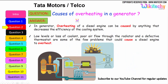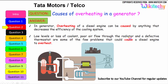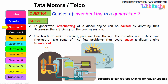Let us move on to the next question: causes of overheating in a generator. Overheating of a diesel engine can be caused by anything that decreases the efficiency of the cooling system — such as loss of coolant or low coolant levels, poor airflow through the radiators, and a defective thermostat. These are some of the problems that could cause a diesel engine or generator to overheat.